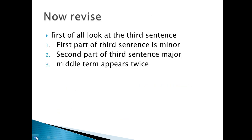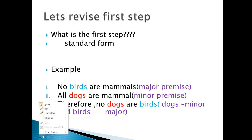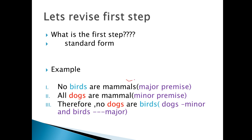Let's talk about it. Consider this example: Statement one — 'No birds are mammals.' Statement two — 'All dogs are mammals.' Therefore, conclusion — 'No dogs are birds.'